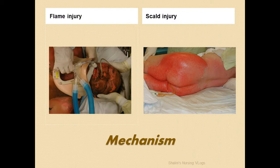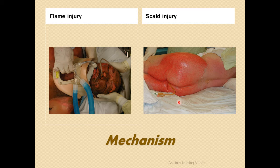Thermal burns have two types: flame injury and scald injury. In flame injury, the victim directly comes in contact with fire, as in the case of a gas cylinder blast or a firecracker injury. Scald injury, on the other hand, is where the victim comes in contact with a liquid or gaseous substance that is hot in nature.